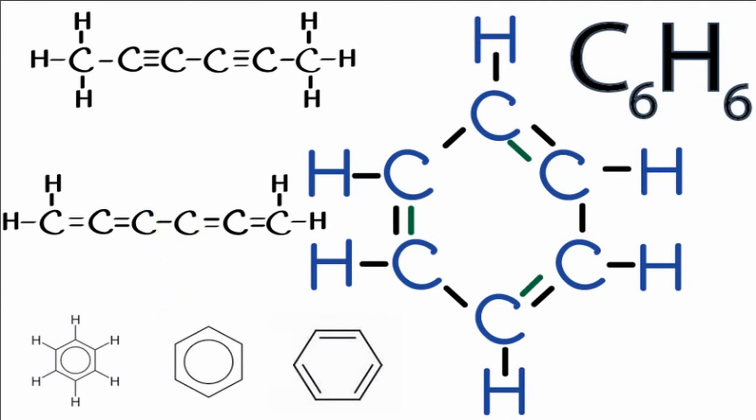There are probably even some other ways that I haven't thought of. So that's the Lewis structure for C6H6. Probably the most common will be the benzene. That's probably what you would be expected to know. But there are other isomers or ways to draw the C6H6 Lewis structure.